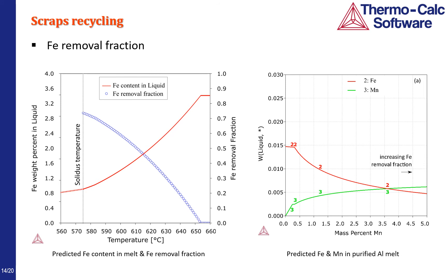If you find it difficult to understand the phase diagram plots, you may also define your own function and directly plot the iron removal fraction, as illustrated on the left-hand side. Once the temperature is defined, we can further work on the manganese addition, but that depends on the target alloy composition. Adding manganese will always decrease the iron content in the melt, but the benefit is less effective at higher manganese contents than at lower manganese contents. Also, higher manganese addition results in a higher manganese content in the melt and also a higher cost.